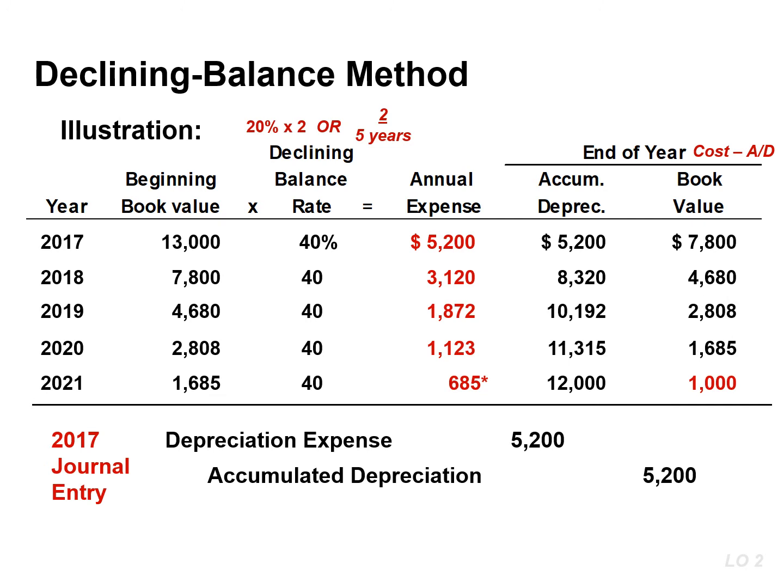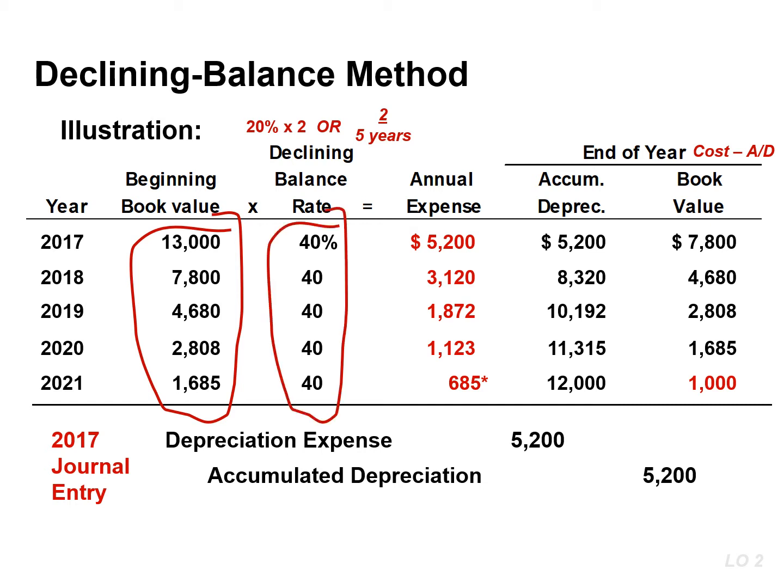This method calculates depreciation based on a declining book value. Annual depreciation expense is computed by multiplying the book value at the beginning of the year by the depreciation rate. The depreciation rate remains constant from year to year, but the book value to which the rate is applied declines each year.